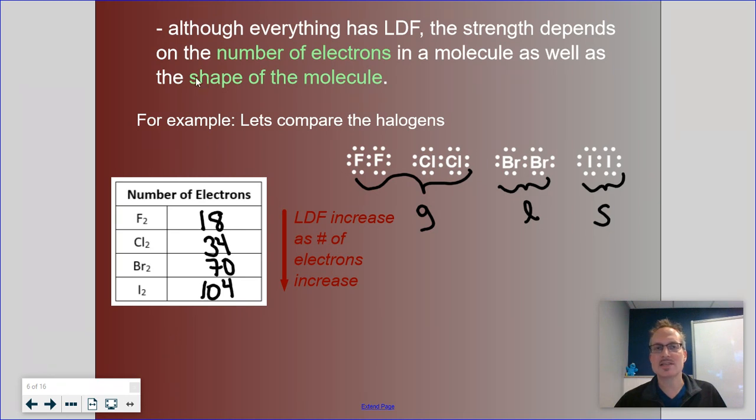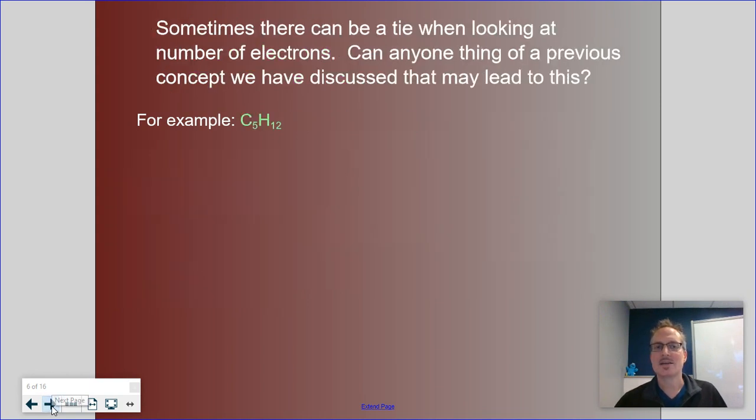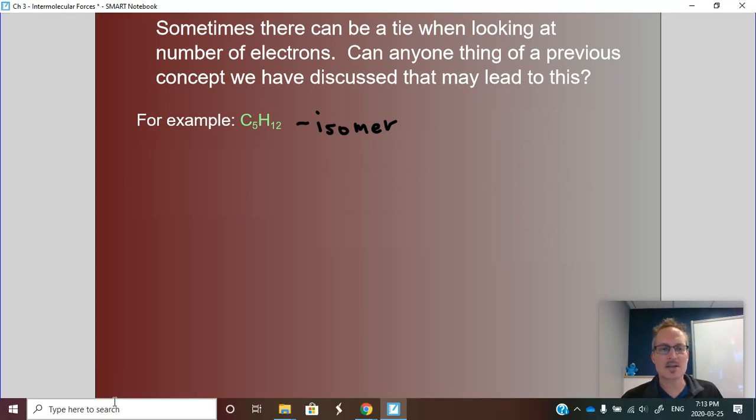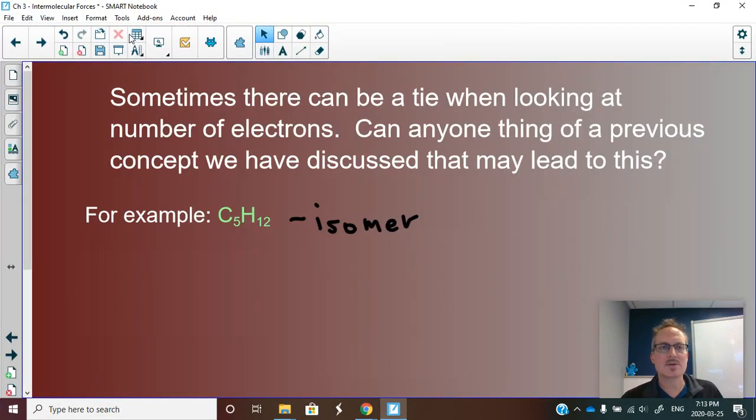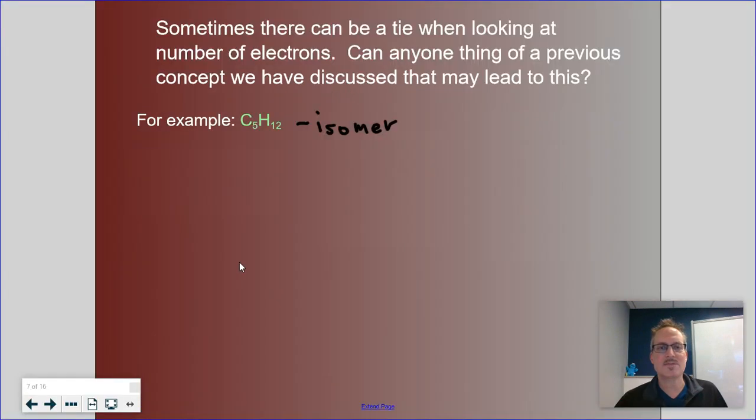Now, sometimes we have to look at shape. And shape is important when we have to break a tie because sometimes we have a molecule and it has the same number of electrons when we're comparing it. A perfect example of this would be something like C5H12. This is an isomer. And I know we've been working really hard on isomers in our classes.